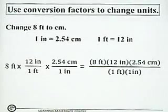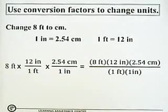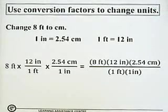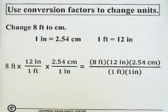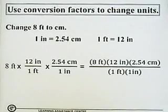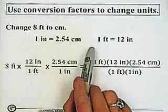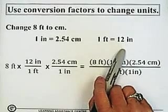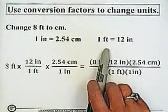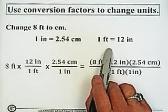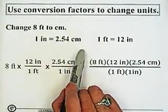Let's look at an example. We have 8 feet and we want to change it to centimeters. I'm going to use two different conversion factors: one inch equals 2.54 centimeters, and one foot equals 12 inches. You might say, why not use a conversion factor that takes you straight from feet to centimeters? But what if you don't have that? What if you only have one inch equals 2.54 centimeters and one foot equals 12 inches? We don't want to remember everything.